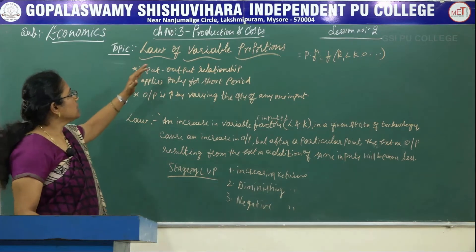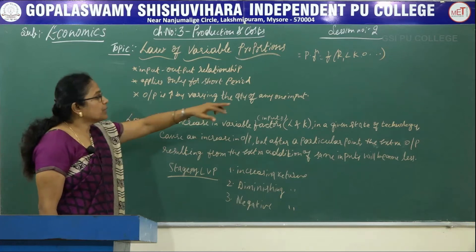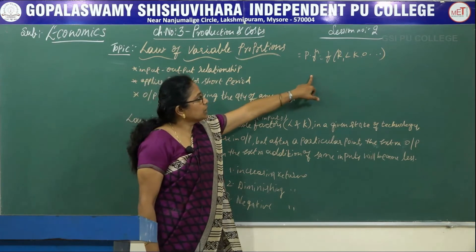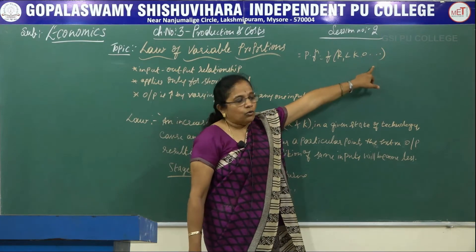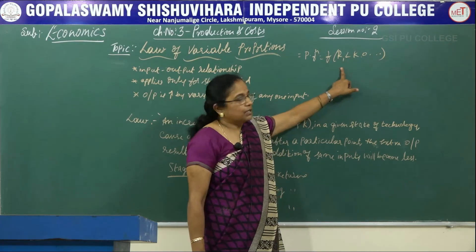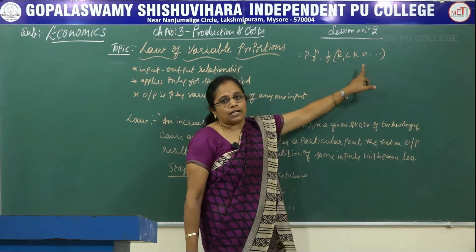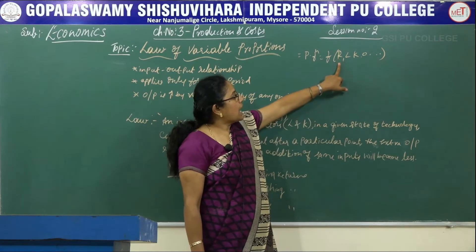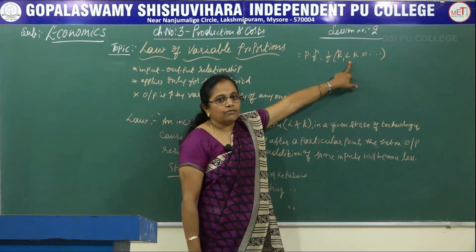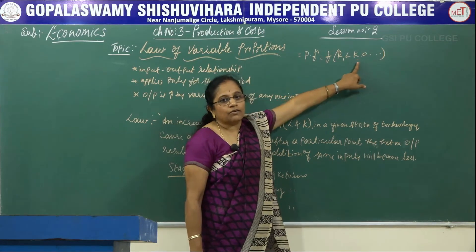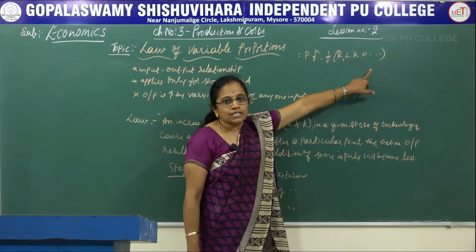The production function is a function of R, L, K and O — where R is land, L is labour, K is capital and O is organisation. The reward for land is rent, for labour is wages, for capital is interest, and for organisation the reward is profit.